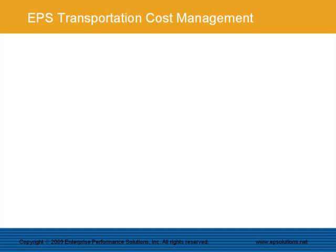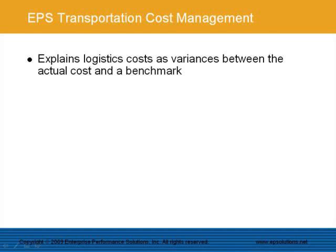Here follows a high-level description of the EPS Transportation Cost Management System. The system explains logistic costs as variances between the actual cost and a benchmark, which could be the budget or prior period costs. The variances are grouped into categories like volume variance, customer mix variance, distribution mix variance, and carrier charge variances, reflecting key cost drivers like routes, modes, carriers, customer locations, and product mixes.